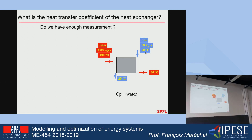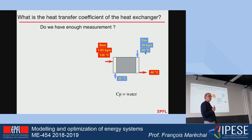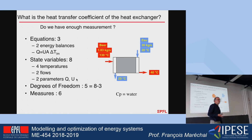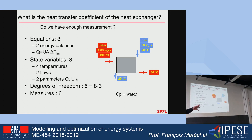We do not need all four temperatures, because the energy balance is going to fix one of them. What we have done is a degree-of-freedom analysis. We make a collection of the equations we have: two energy balances and a heat transfer model. We have state variables including two from the heat exchanger, so normally we need only five values to solve the problem. We have six, meaning something is redundant. This is quite obvious here, but the reality is that systems can be much more complex, and we still need to verify that we have enough measurements.